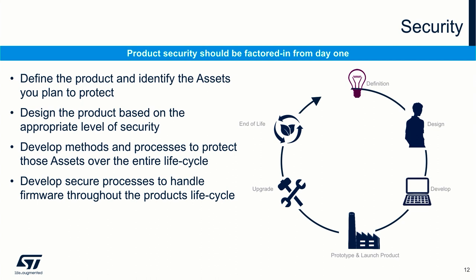Usually people may think that when they develop a product, they should first finish all the functional features and then at the end look at what security features they can add. But that's not the right way. Security should be something you consider since day one. You need to identify the assets you want to protect at the time you define the product, define the appropriate level of security when you design the product, and at the development phase put in place methods and processes to protect those assets over the entire life cycle — when the product is manufactured, when it is in use on the market, when it needs to be updated, or even at the end of its life.